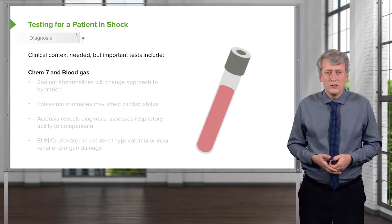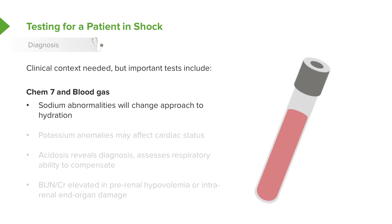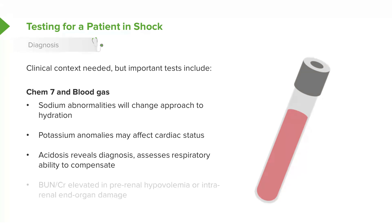Whatever the clinical context, there are a few labs to consider. The CHEM7 and blood gas should be obtained emergently. The CHEM7 will show sodium abnormalities — classic in severe dehydration — with either hypernatremia or hyponatremia. Potassium anomalies may cause cardiac arrhythmia, so checking potassium is important if you're worried about a high or very low level. The blood gas reveals metabolic acidosis and lets you assess respiratory compensation. If a patient has a low carbon dioxide but is still acidotic, it implies they're trying to compensate for their metabolic acidosis.